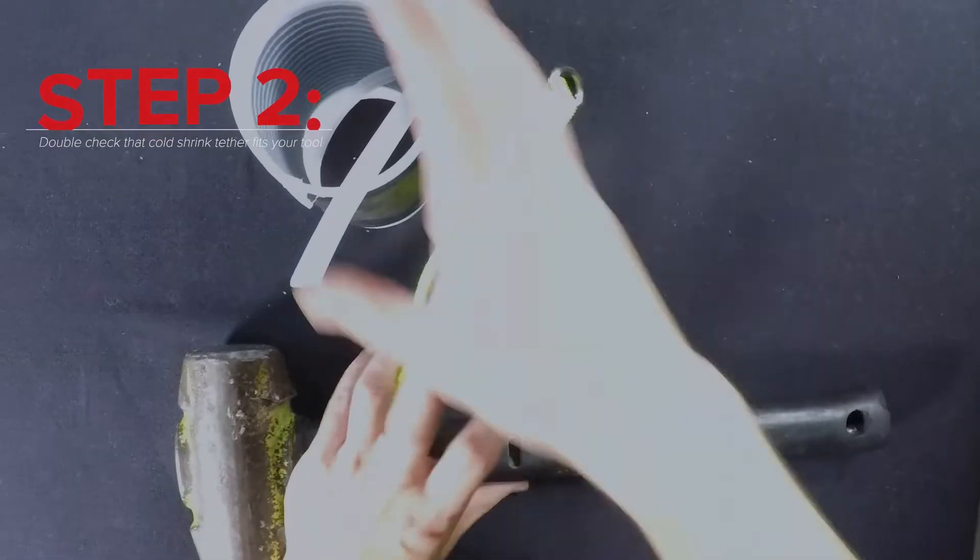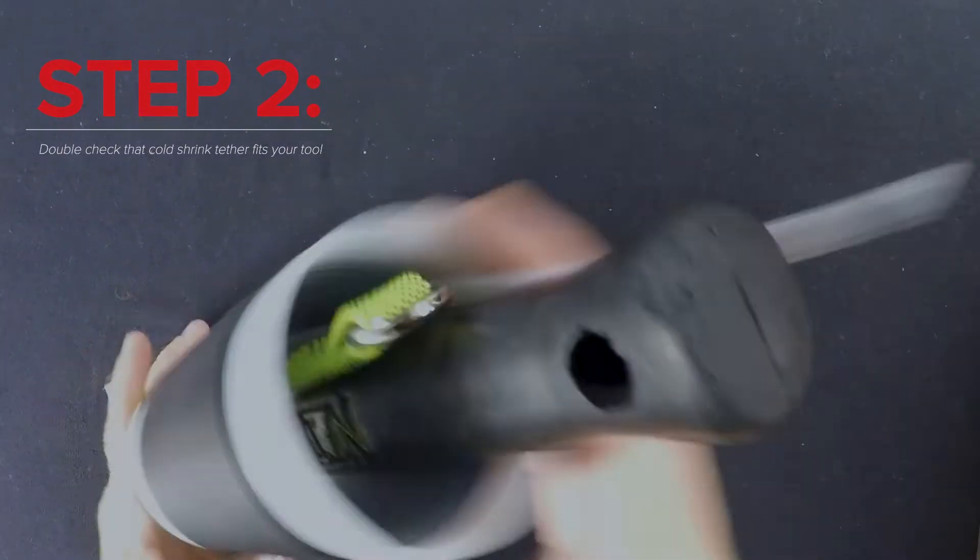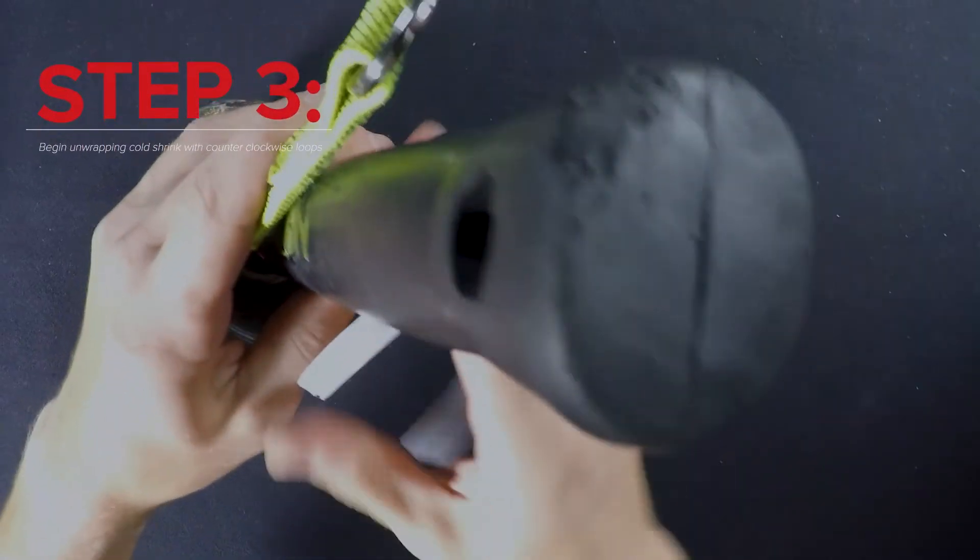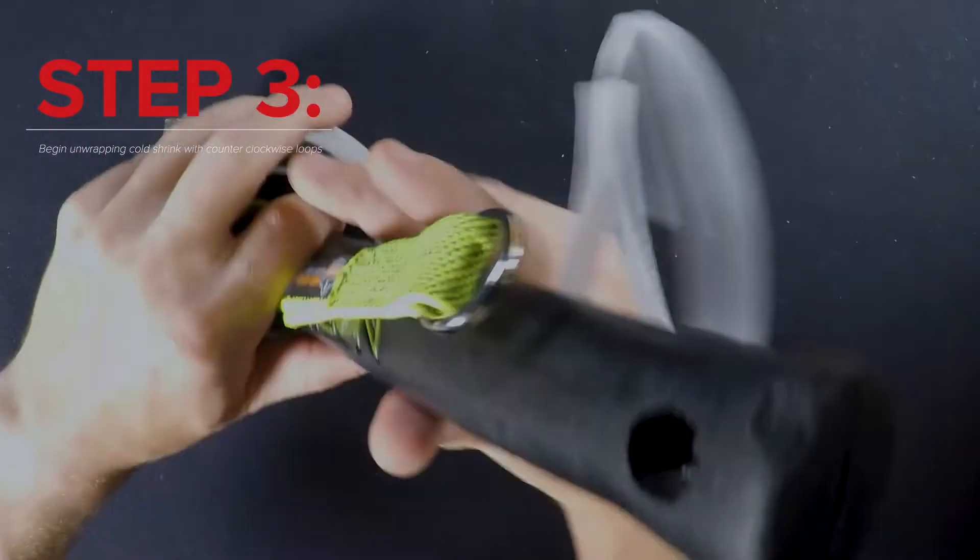Here it is important to double check that the entirety of the shrink wrap will fit on the tool handle and above the choke portion of the tail. Once you have the shrink trap where you want it, begin unwrapping the inner core through itself with a counterclockwise motion.